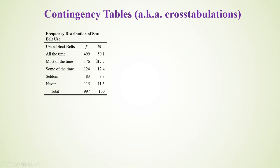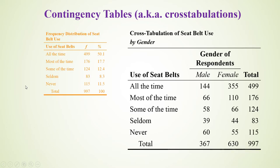Now this on screen is not a contingency table — this is just a frequency table. This is the results of a survey where a bunch of people were asked how often they use their seat belts. It's a frequency distribution, so here are the frequencies and percentages. A cross tabs or contingency table adds in another variable — two categorical variables at once.